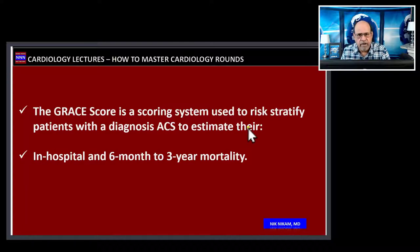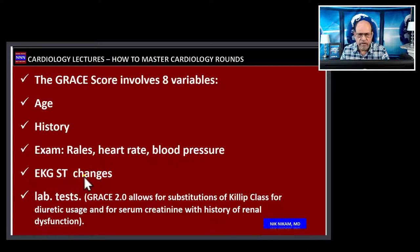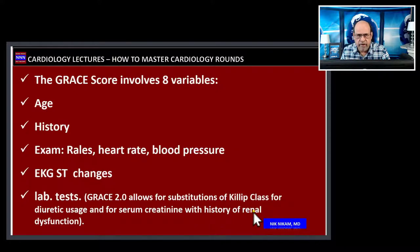The GRACE score involves eight variables: age, history of heart failure, heart rate, systolic blood pressure, ST-segment changes, serum creatinine, cardiac arrest, and elevated cardiac enzymes. In GRACE 2, they substituted Killip classification of heart failure with diuretic usage, and replaced serum creatinine with a history of renal dysfunction. Those are the two main differences between GRACE 2 and GRACE 1.